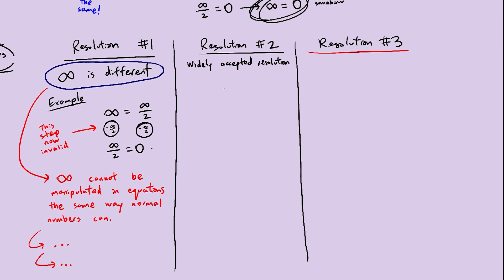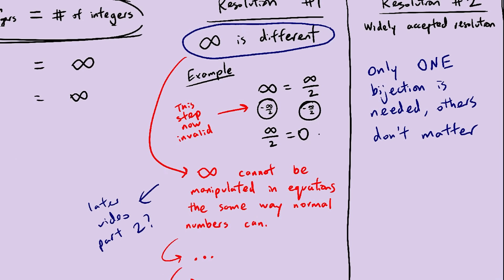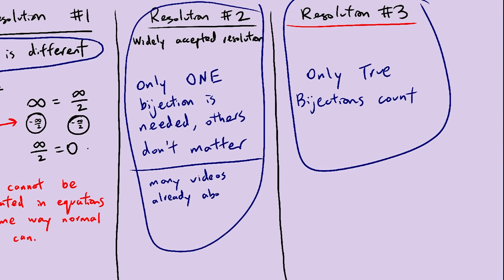Okay, so we have our three ways of resolving the paradox. I think we'll go with the third one. It seems to be the most interesting one. Maybe we'll explore the first option as well in a later video. The second option is the correct one, so we won't go into that.